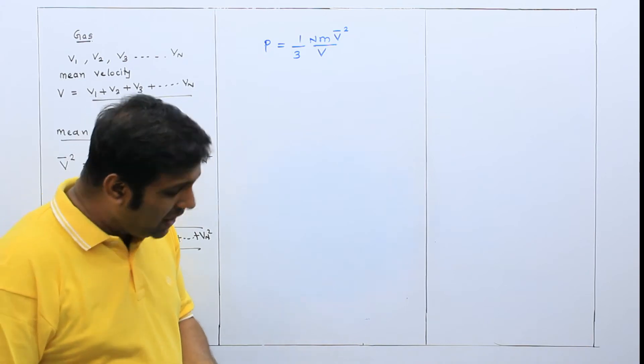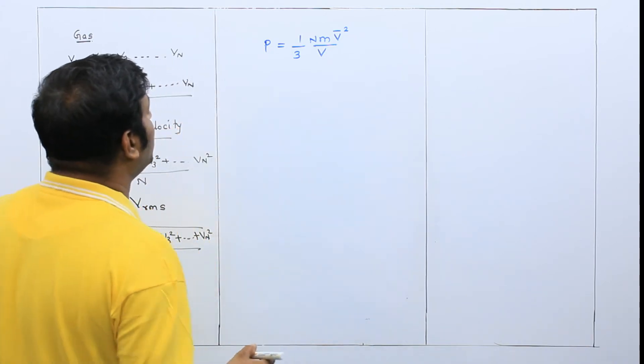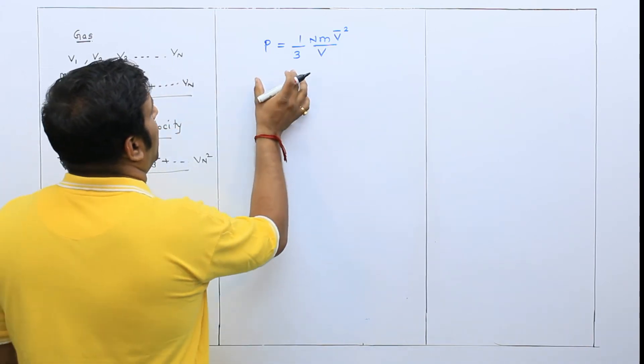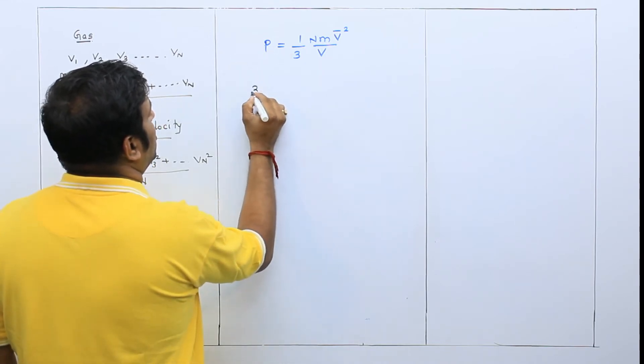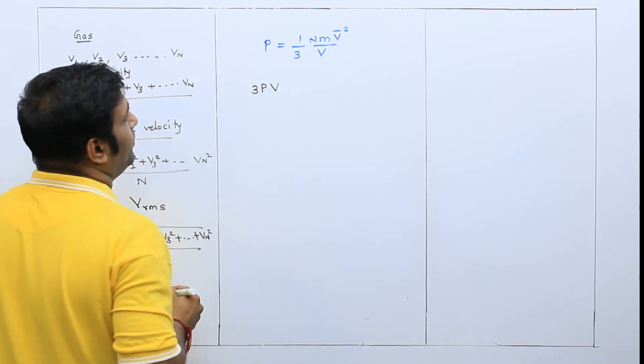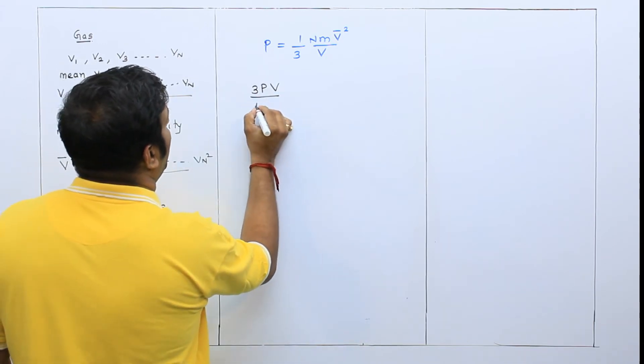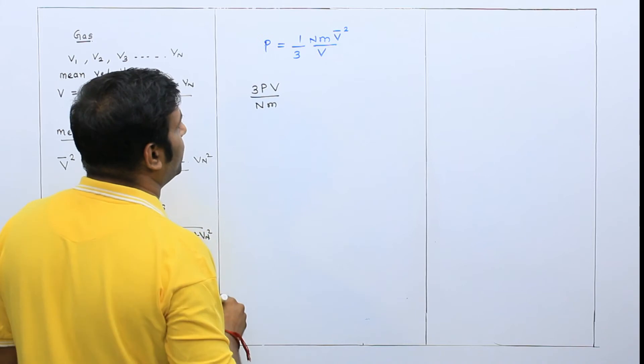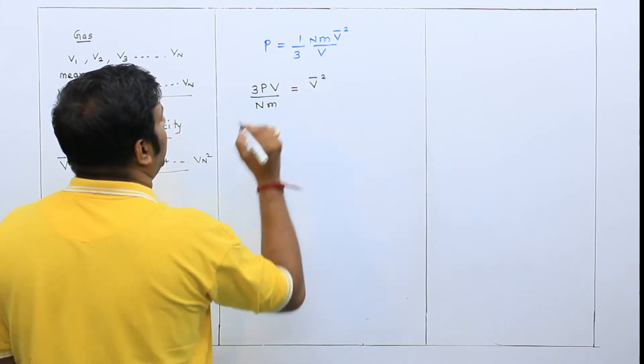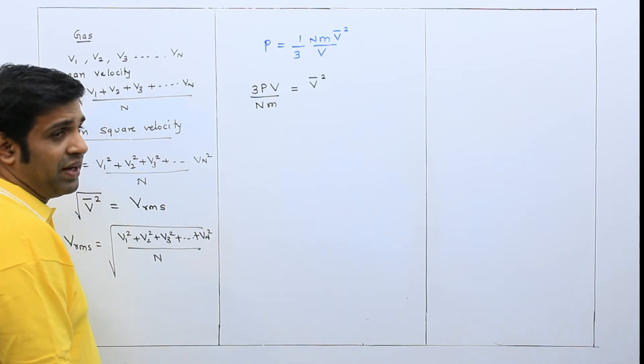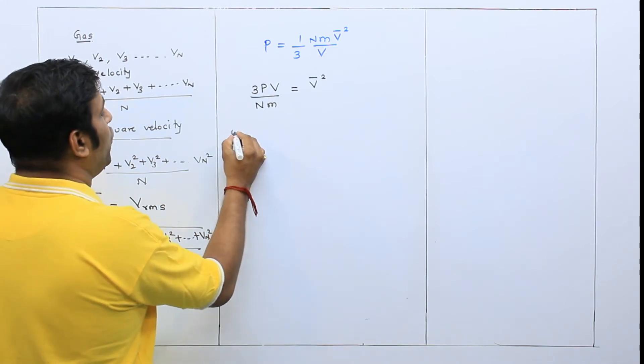Now, if I have talked to the other side, I will give it to this type of V. So this is 3PV upon Nm is equal to v bar square. VB is equal to v bar square. We know that.